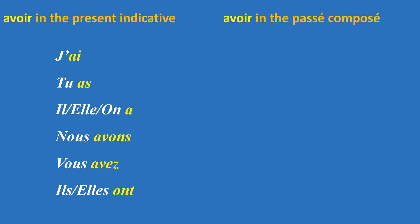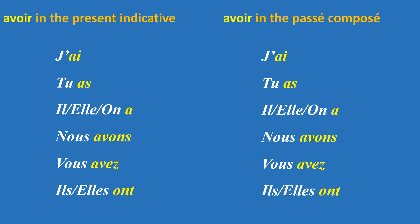First, we'll duplicate the left part of the screen, then we'll add the past participle of the verb avoir, which is eu. This way, we obtain the verb avoir conjugated in the passé composé.